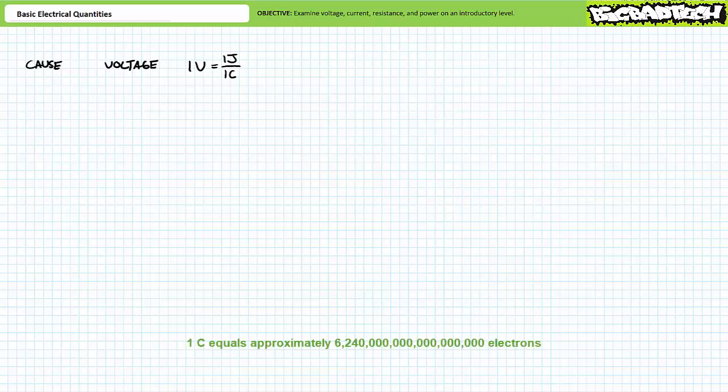It is a lot, lot, lot more. One coulomb equals 6.24 times 10 to the 18th charges. One can represent the concept of voltage in shorthand using a capital V.